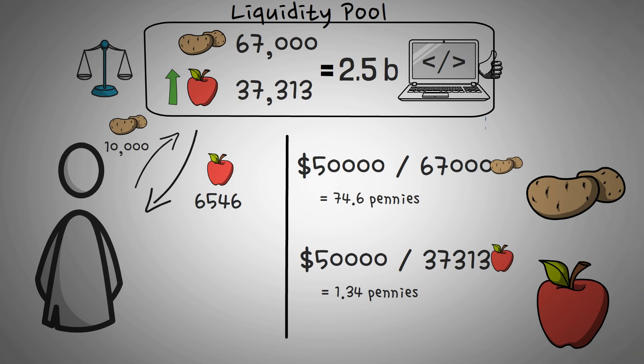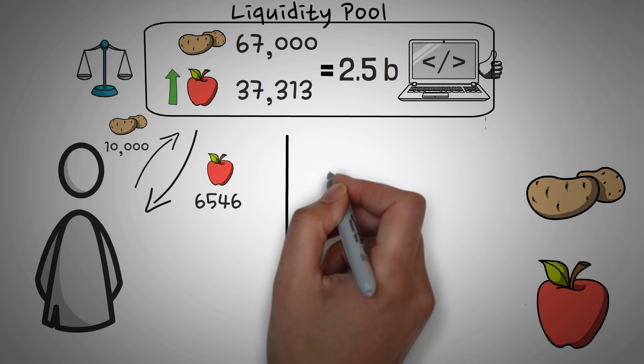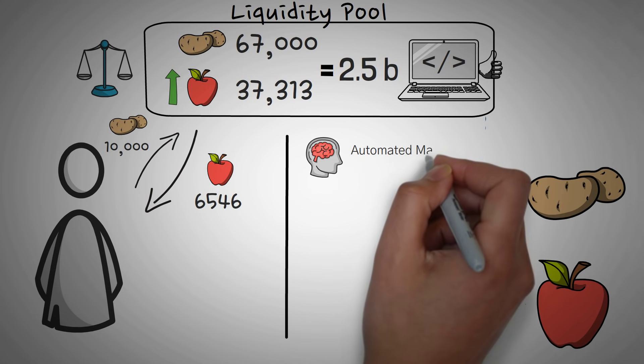So again, we saw that there were more potatoes than before, so the price dropped, and there were less apples than before, so the price rose. Now hopefully you are understanding how an automated market maker works.